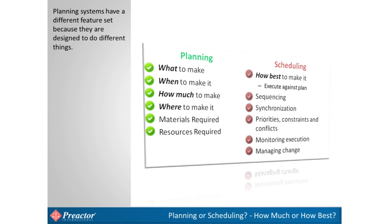Scheduling tools work out how best to make it — the best way to execute the plan. It looks at the best sequence of work on each resource, works in real time, and will only load operations based on when all required resources are available. It generates a work-to list for each resource over the whole schedule horizon, gets feedback on actual times, and helps manage inevitable changes such as late arriving materials, machine breakdowns, and changes in order priorities.